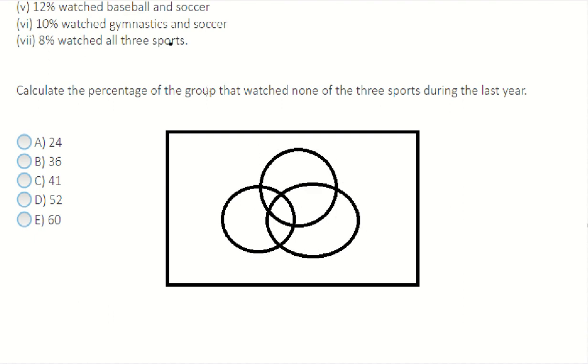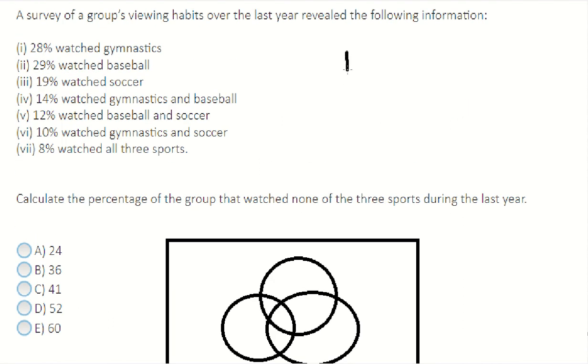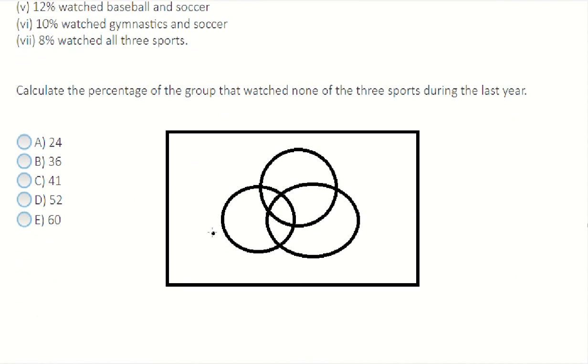So let's say we have 100 people. That means 28 people watch this one, 29 people watch this one. So I will have A, B, and C.